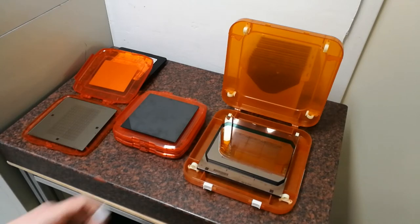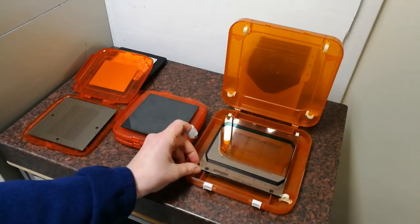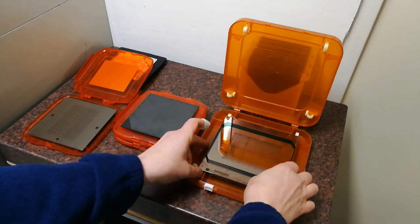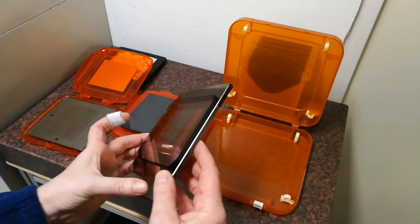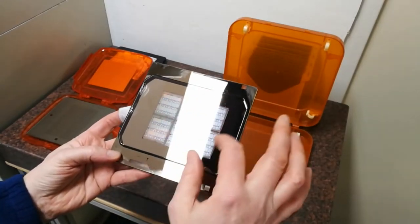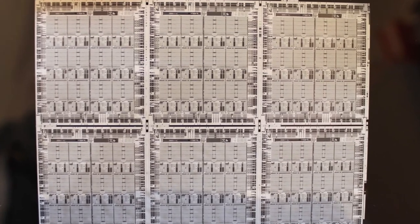Now the second type of mask is the projection mask. And what you can see is immediately that this mask is quite a lot thicker. So it is actually a thick quartz plate and it contains the chip pattern in this case. It actually contains six chips.